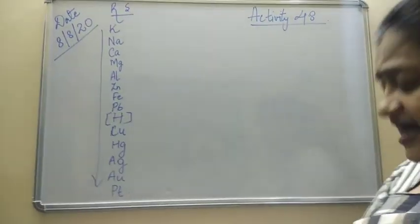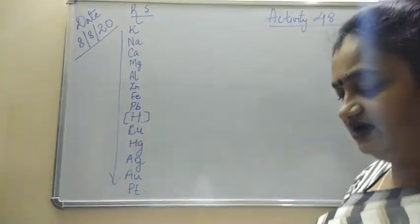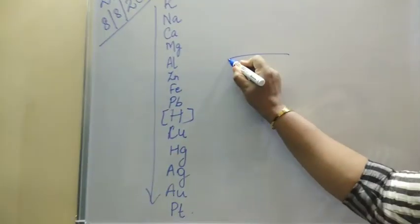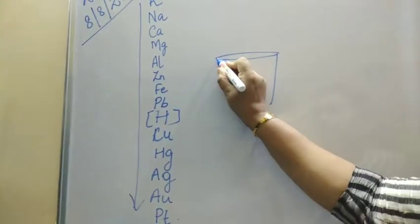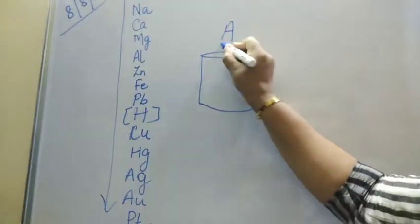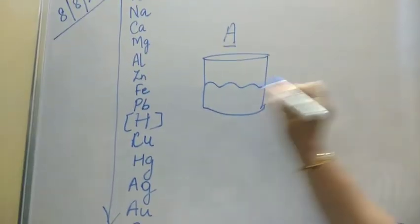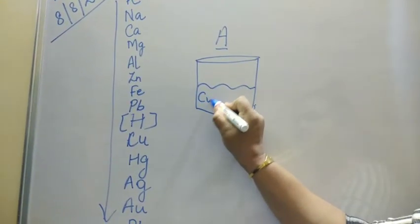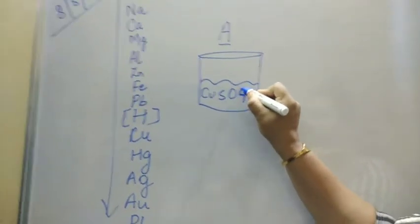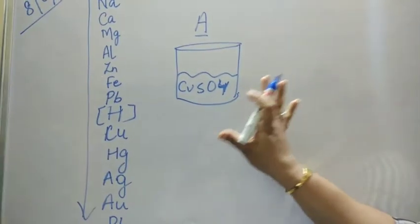In this activity, what has to be done? They have taken 4 beakers. Let's start with the 4 beakers. Beaker number 1, and in beaker number 1, that is they have symboled it as A. In this they added a solution which is CuSO4. A solution is there which is CuSO4.